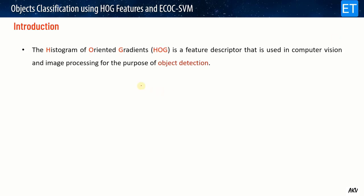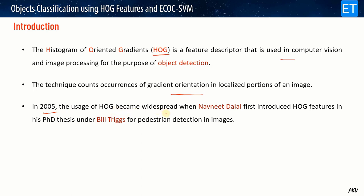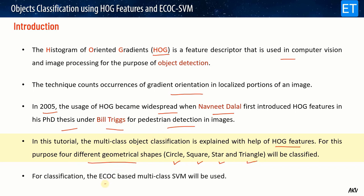The Histogram of Oriented Gradients (HOG) is a feature descriptor used in computer vision and image processing for object detection. This technique counts the occurrence of gradient orientations in localized portions of an image. In 2005 HOG became widespread when Navneet Dalal first introduced HOG features in a PhD thesis for pedestrian detection in images. In this tutorial I am going to implement multi-class object classification using HOG features, classifying four different geometrical shapes: circle, square, star, and triangle, using the ECOC-based multi-class SVM classifier.